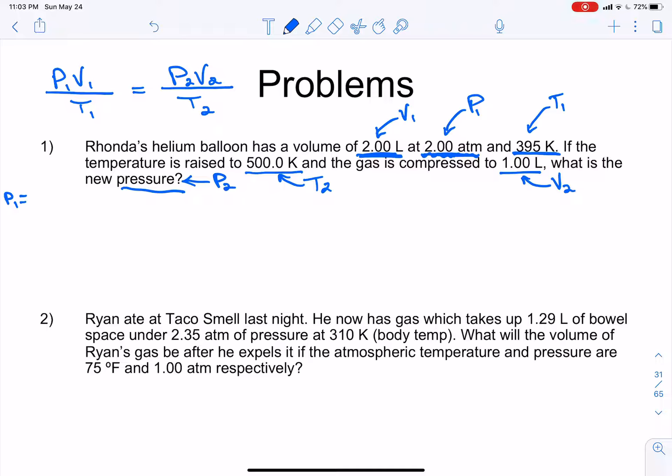Okay, so to organize our thoughts, we're going to do P1, V1, and T1. And our first pressure is what? It is 2 atm. And our first volume is 2 liters. And our first temperature is 395 kelvin.